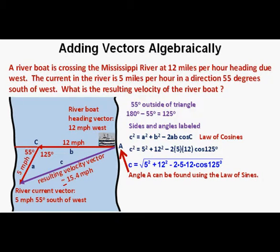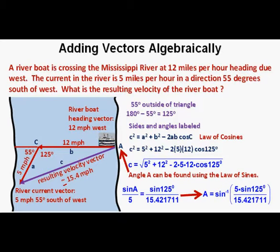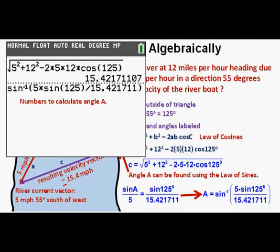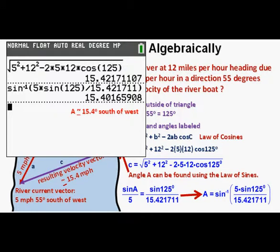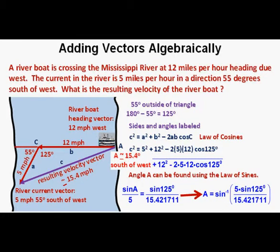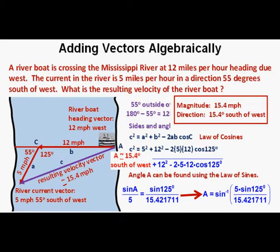Next we find the direction using the law of sines. We have sine of angle A over 5 equals sine of 125 degrees over 15.421711. Solving for angle A, we get angle A equals the inverse sine of 5 times sine of 125 degrees over 15.421711. We get angle A equal to 15.4 degrees, and the direction is south of west. So the velocity vector has a magnitude of about 15.4 miles per hour and a direction of 15.4 degrees south of west.